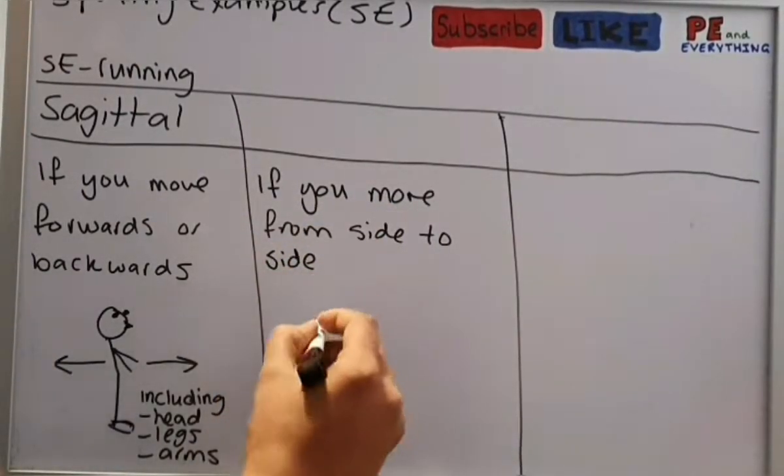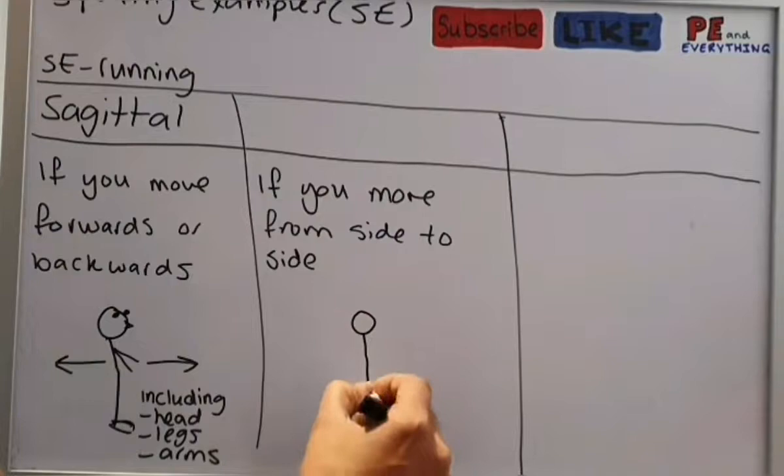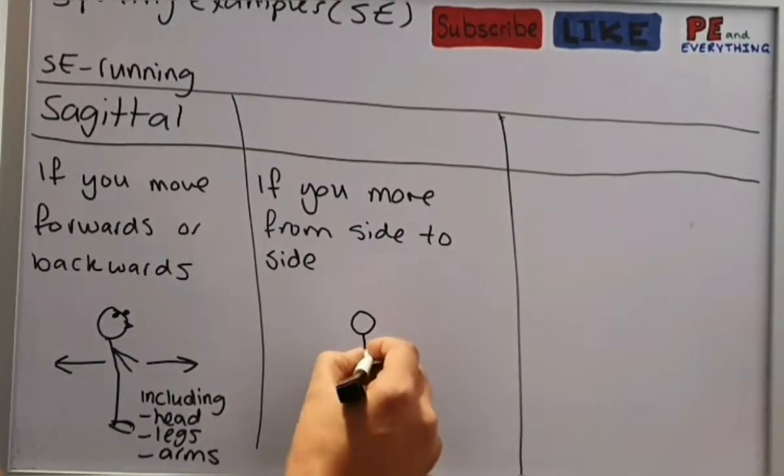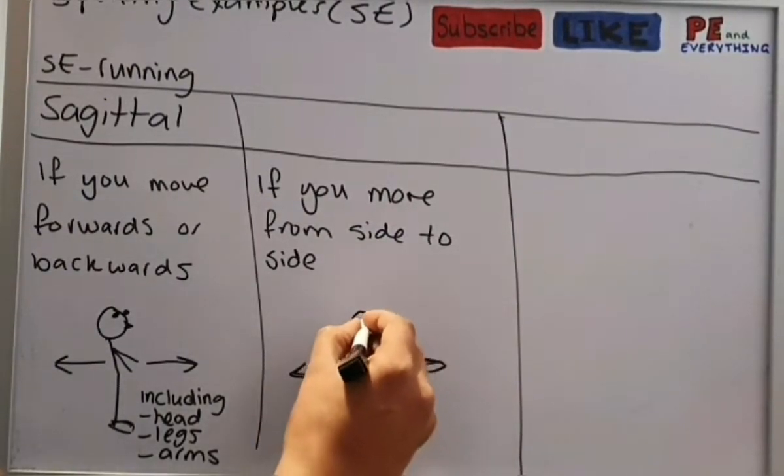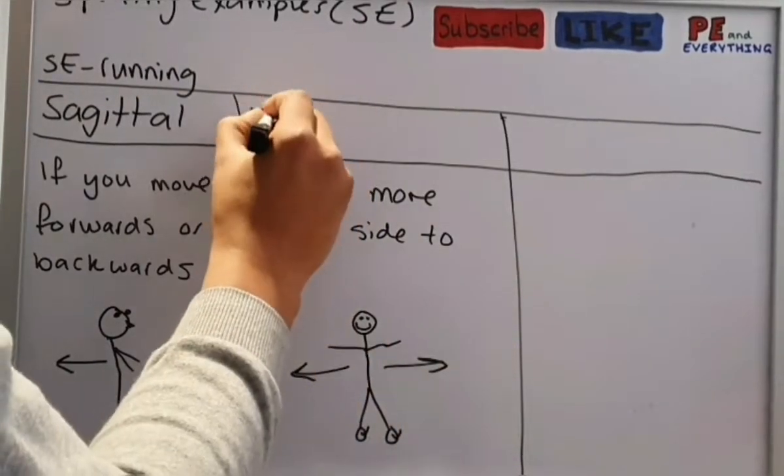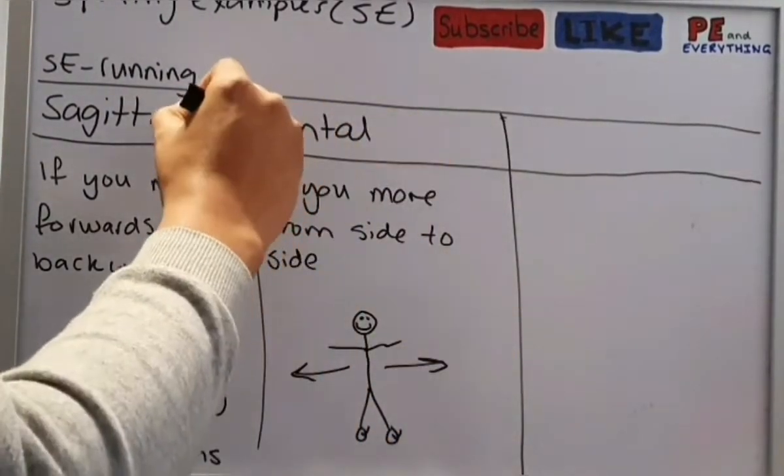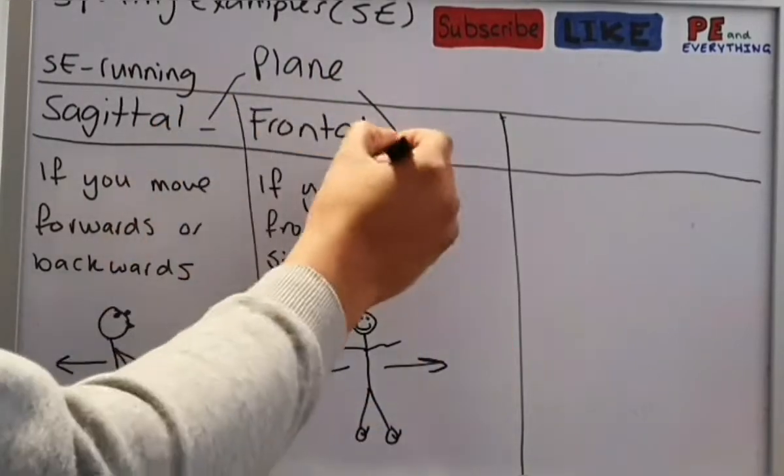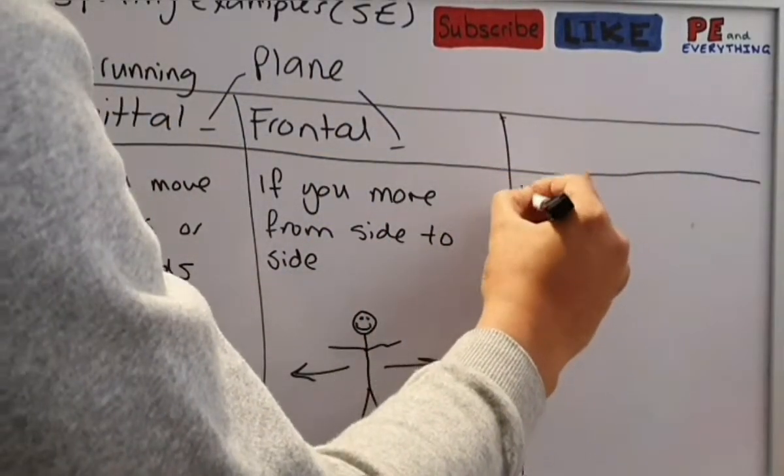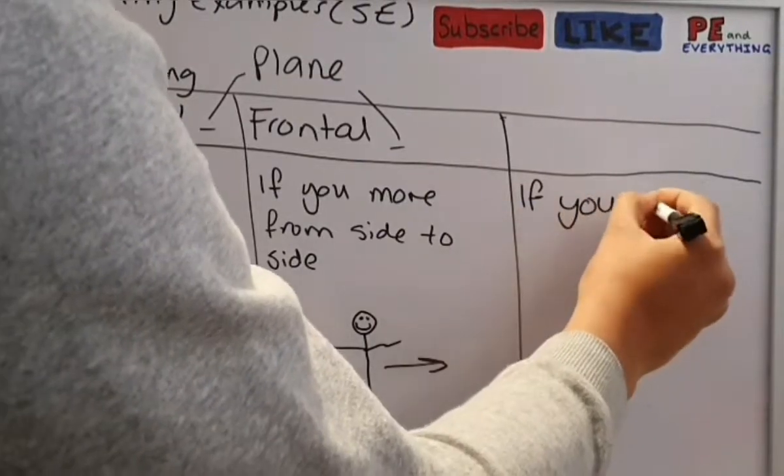Next, if you move from side to side, as this beautiful stick figure is showing, this is called the frontal plane. That also includes the head, the legs, the arms, everything.